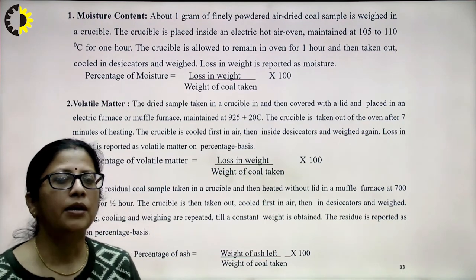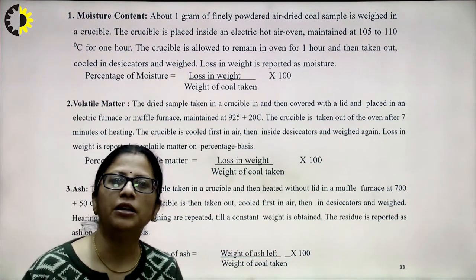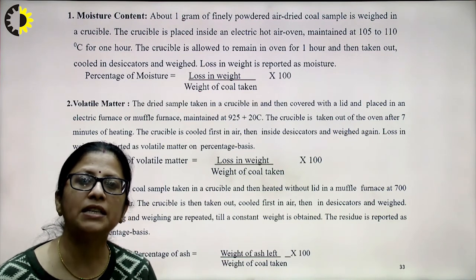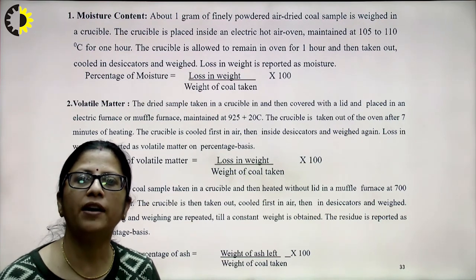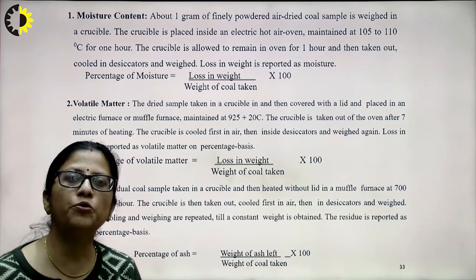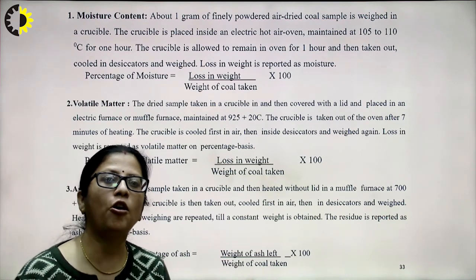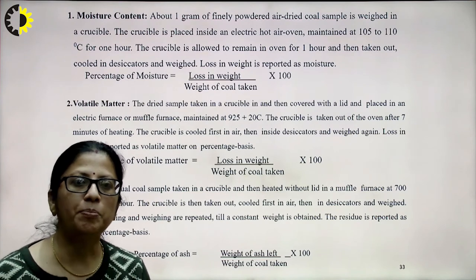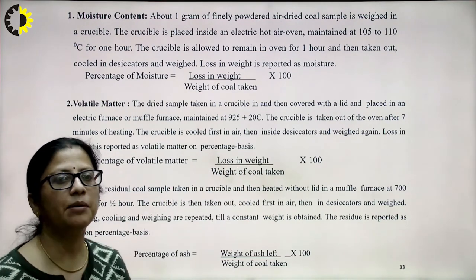For volatile matter, the dried coal sample from which moisture has been removed is taken in a crucible, covered with a lid, and placed in a muffle furnace at 925 ± 20°C for exactly 7 minutes. The crucible is taken out, cooled in air, then in a desiccator, and the weight loss is reported as volatile matter on a percentage basis: percentage of volatile matter = (loss in weight / weight of coal taken) × 100.